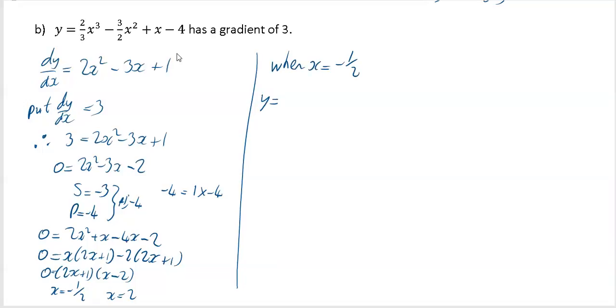When x equals minus a half, your y value - now be very careful folks, this is the original y equation, not your dy/dx equation - so put it back into the original and use your calculator. That's 2/3 times (minus a half) cubed minus 3/2 times (minus a half) squared plus (minus a half) minus 4. That worked out for me to be minus 4 and 23/24. So my first answer is minus a half, minus 4 and 23/24.